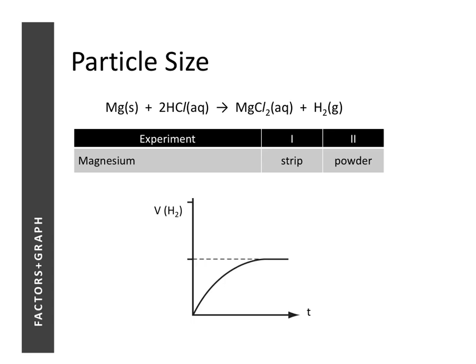Next we look at the effect of particle size on the shape of the graph. We are monitoring the volume of hydrogen gas produced with time. The difference between experiments is that experiment one uses magnesium strips while experiment two uses magnesium powder. Experiment two will be faster because the total surface area available for reaction is higher. We would therefore expect the initial rate to be faster.